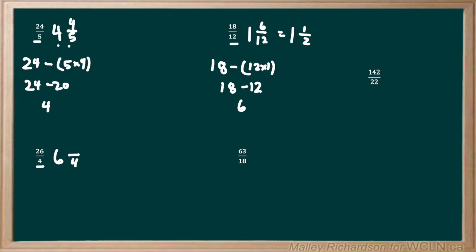To find the numerator, we take the numerator of our original question and subtract it by 4 times 6. We know that 4 times 6 is 24, so we have 26 minus 24 and get a final answer of 2. So we have 6 and 2 over 4, but 2 over 4 can reduce down to 1 half, so we have 6 and 1 over 2.